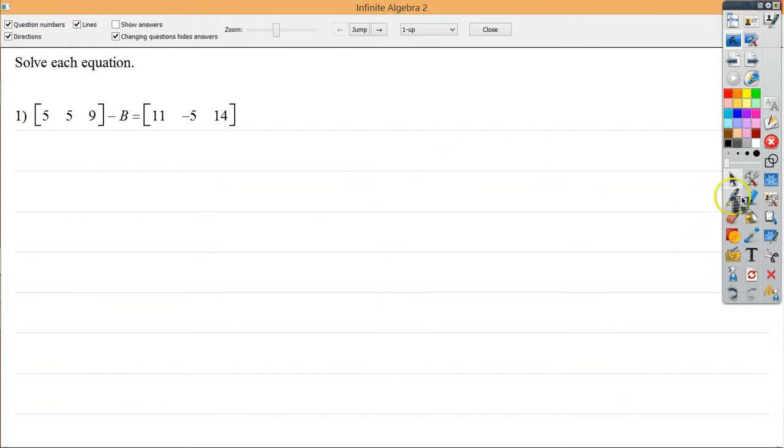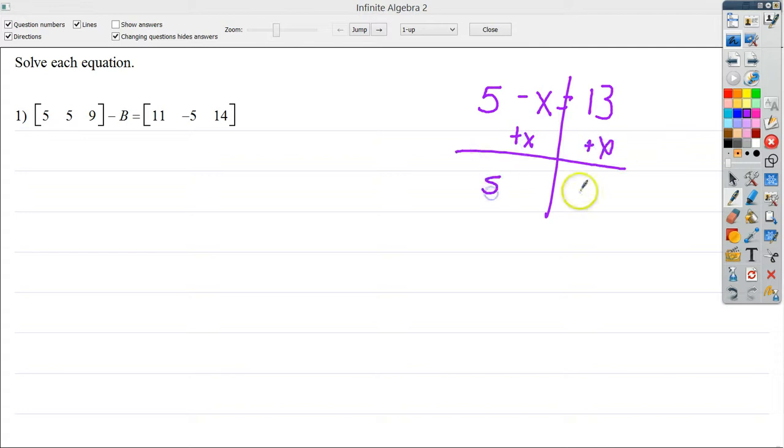This is very similar to having something like 5 minus x is equal to, let's say, 13. Now, there's a couple ways I could go about it. I could move the x over here by adding x to both sides and end up with 5 equals x plus 13. And in that case, I would subtract 13 from both sides and find out that x is equal to negative 8.